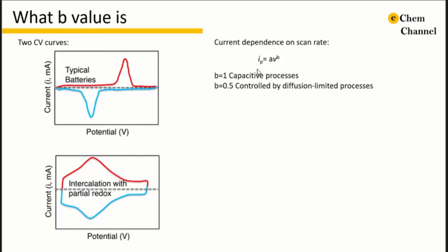Researchers find that the peak current IP is proportional to the square roots of scan rate for a totally reversible diffusion limited process. So we can write an equation. The peak current IP equals to a times v to the power of b, whereas v means the scan rate.